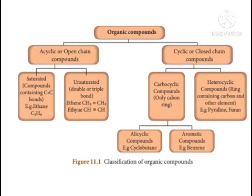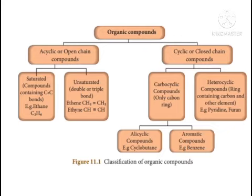If the ring contains only carbon atoms, it is called a carbocyclic compound. Carbocyclic compounds contain only carbon atoms. Heterocyclic compounds contain carbon as well as other elements such as oxygen, nitrogen, and sulfur. Carbocyclic compounds are further classified into two types: alicyclic compounds and aromatic compounds. Alicyclic compounds contain one or more carbocyclic rings, which may be saturated or unsaturated. Aromatic compounds are formed by one or more benzene rings, containing alternate double bonds between the carbon atoms.